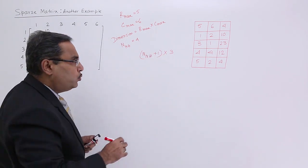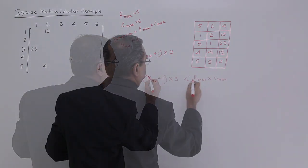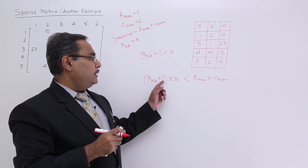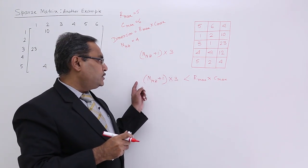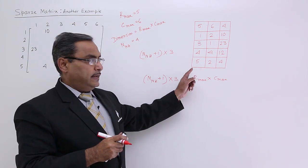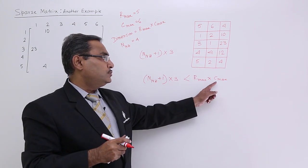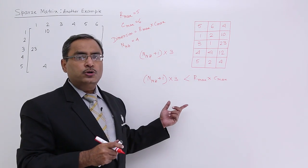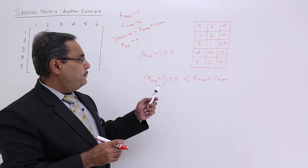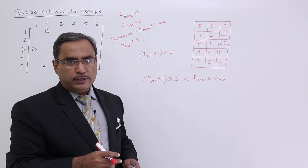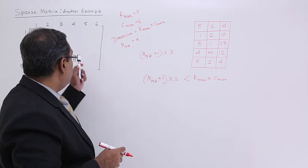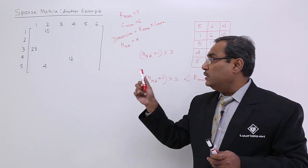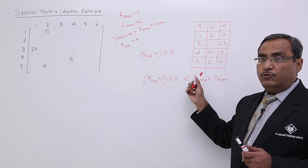Now obviously, this representation will be good enough if nz plus 1 into 3 that is the dimension of my proposed matrix is lesser than rmax into cmax. When this inequality will hold good, then only this representation will be better compared to this one. That means if the non-zero data number is going on increasing, then this particular matrix will be having multiple rows.